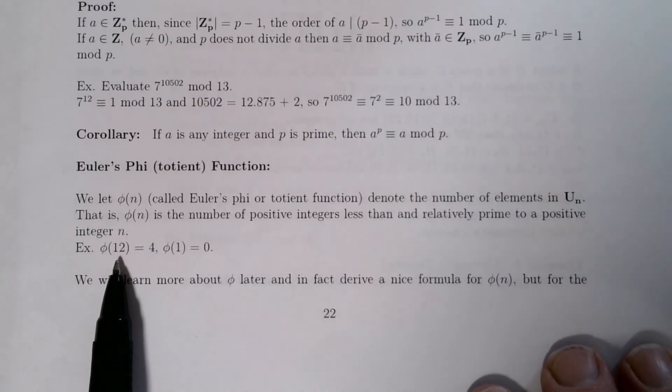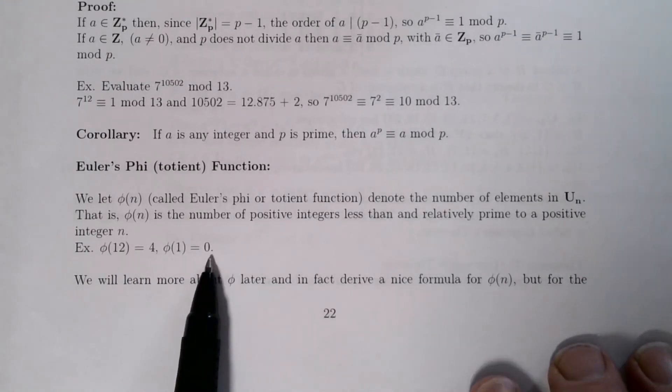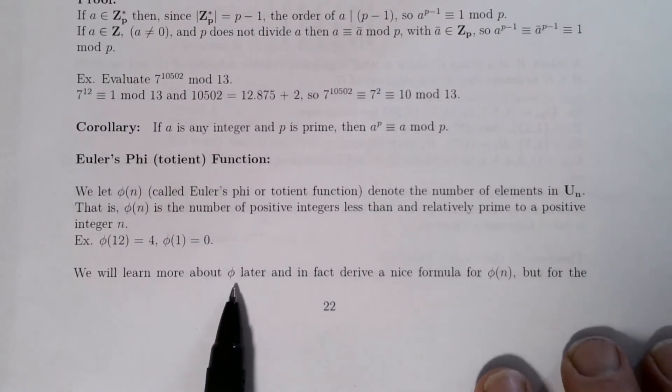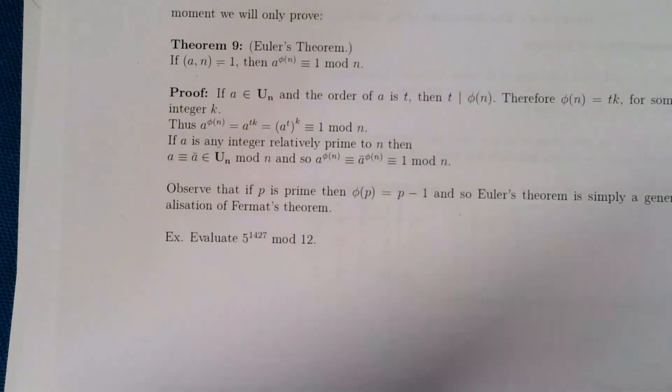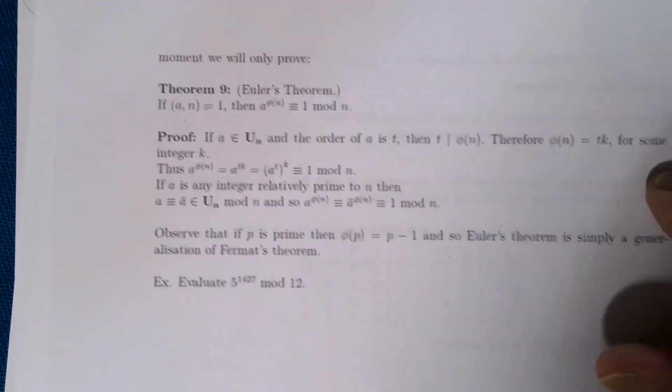So φ(12), for example, is 4, because the numbers that are relatively prime to 12 are 1, 5, 7, and 11. There's 4 of those, so we put that equal to 4. We're going to learn more about phi later, and in fact we'll derive a very nice formula for φ(n). But for the time being, I just want to connect this back with what we did with Fermat's theorem.